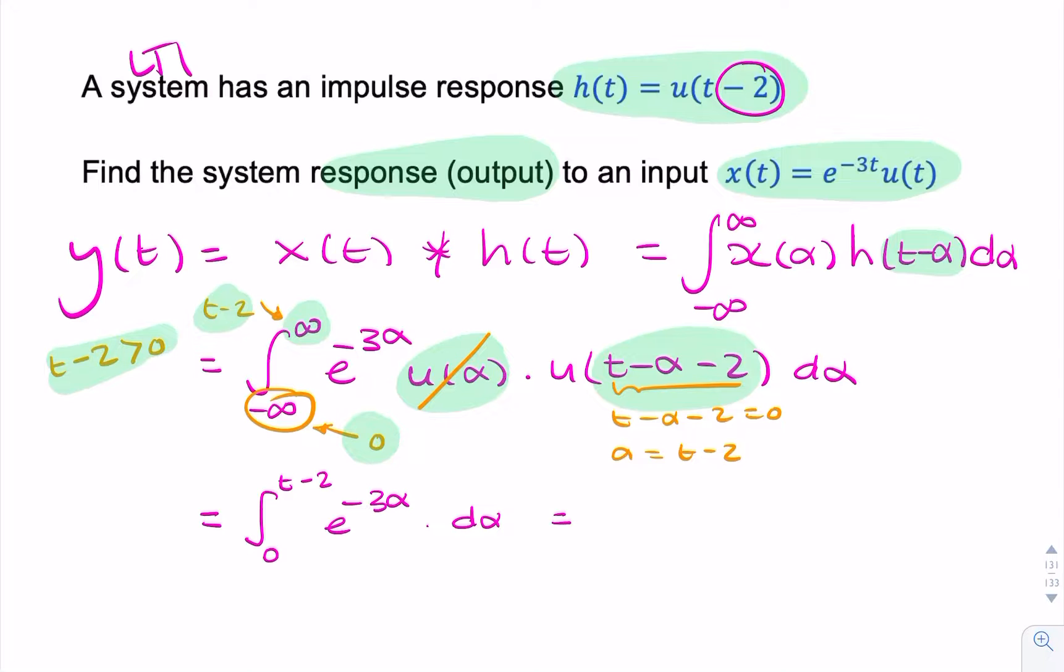So that's just 1 over 3. If you do the plus and minus, you end up with 1 minus e to the minus 3 t minus 2.